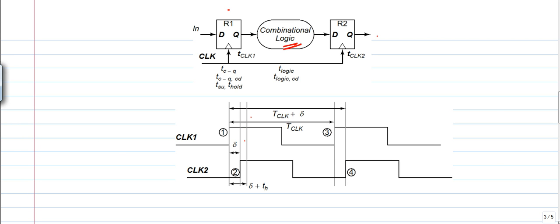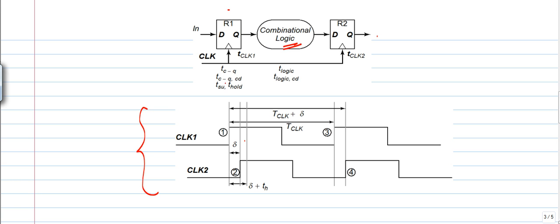In this video I will give you an idea to understand the difficult concepts in clock skew, namely positive skew and negative skew circuits. The circuit I have taken to give that basic idea is the basic sequential circuit consisting of two flip-flops and a combinational logic circuit, and this is the timing diagram for the above circuit.